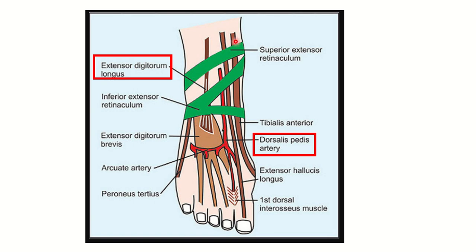The first muscle is tibialis anterior — the dorsalis pedis artery lies lateral to the tibialis anterior. The second muscle is extensor hallucis longus — the dorsalis pedis artery also lies lateral to extensor hallucis longus. Then we can see another muscle tendon, the extensor digitorum longus, and the dorsalis pedis artery lies medial to this tendon.